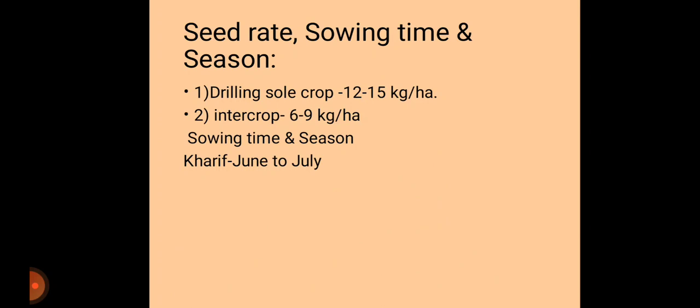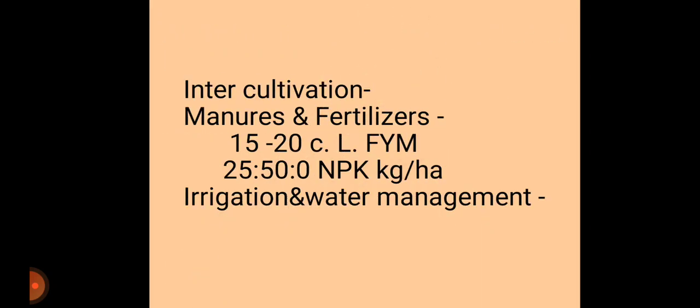For sole cropping, the seed rate required is 12 to 15 kg per hectare. For intercropping systems, 6 to 9 kg of pigeon pea seed per hectare is required. Pigeon pea is generally sown in the kharif season, with sowing time at the early onset of monsoon, i.e., June to July.